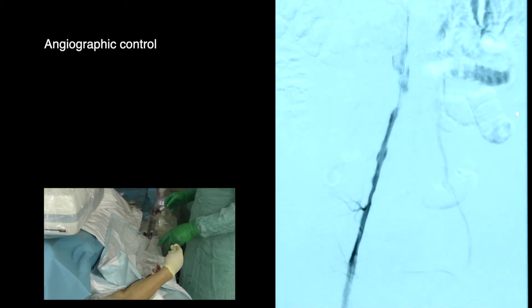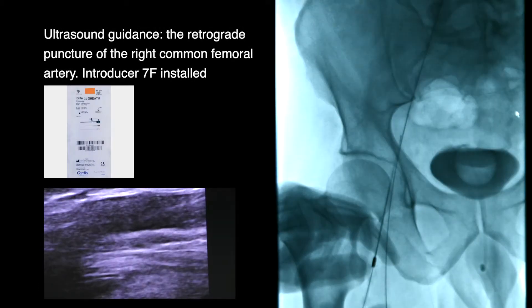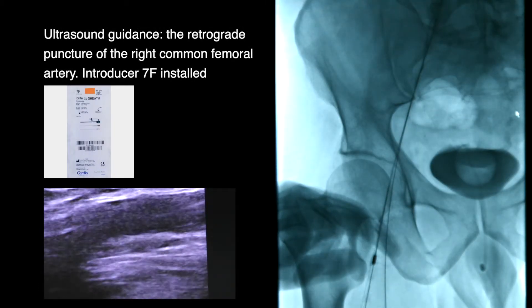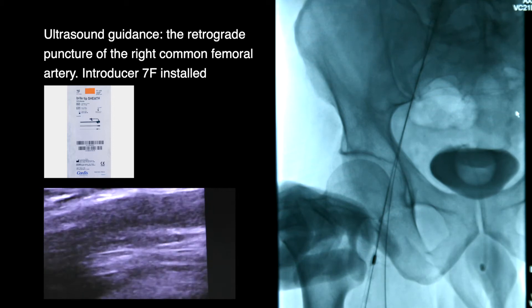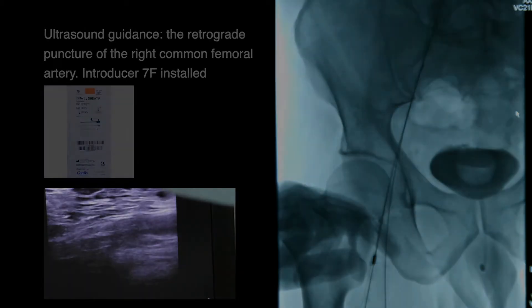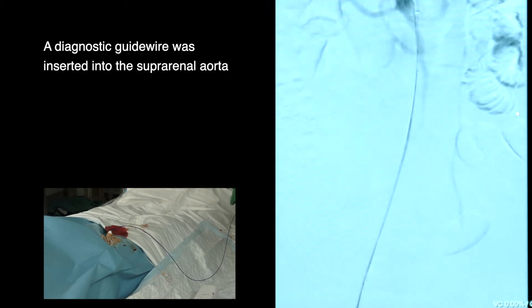Angiographic control obtained. Under ultrasound guidance, retrograde puncture of the right common femoral artery was performed. A 7 French introducer was installed, and a diagnostic guide wire was inserted into the suprarenal aorta.